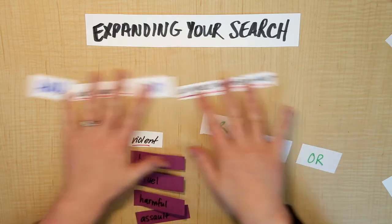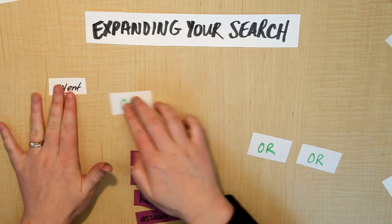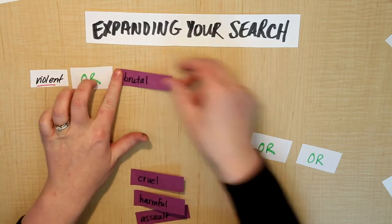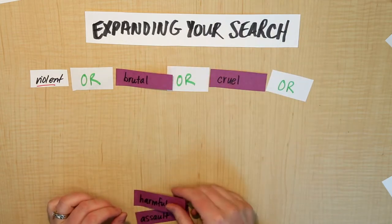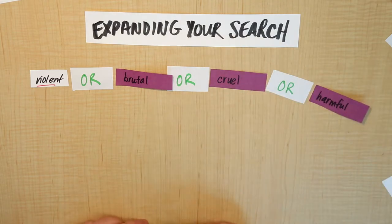So I'm just going to move these ones out of the way so we can see. What we can do is set it up so that we say violent is an okay word OR brutal OR cruel OR harmful or any of these. You can do as many as you want in a row.